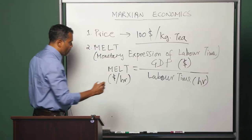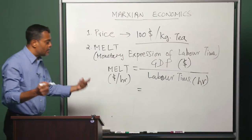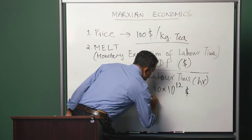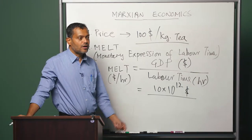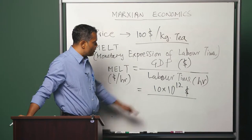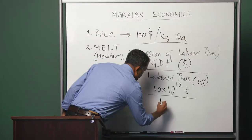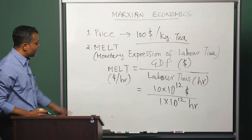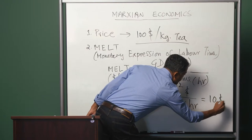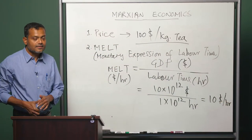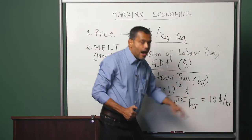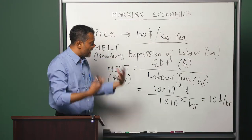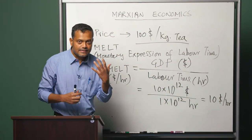Let us take an example. Say the GDP of the US economy in a particular year is 10 trillion — that is 10 × 10¹² dollars. Say the total labor time involved in producing the GDP, counting all workers, is 1 trillion — that is 1 × 10¹² hours. In that case, the MELT comes out as 10 dollars per hour. What does this tell us? It tells us that 1 hour of productive labor on average in the US economy for that particular year was expressed in terms of 10 units of money, that is 10 dollars.